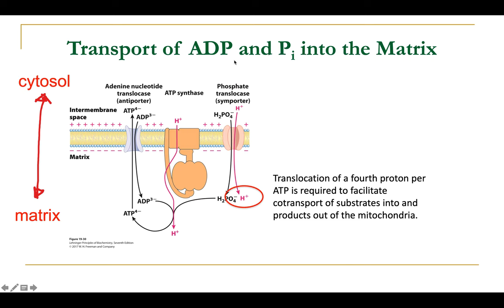On the other hand, ATP is consumed mostly in the cytosol and provides the substrate for ATP synthase — ADP and inorganic phosphate — in the cytosolic compartment, while it is required by ATP synthase in the mitochondrial matrix. So the question is how the ATP synthase is fueled and how its product, ATP, is transported back to its final destination, the cytosol.